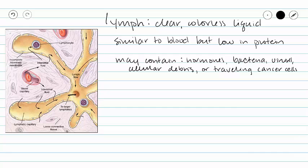Lymph is a clear colorless liquid that is derived from our interstitial fluid. Fluid from our blood is going to leave our blood and go into our interstitial spaces. Now protein cannot leave our blood, so this lymph is not going to contain a lot of protein because protein is simply too big to leave our capillaries.